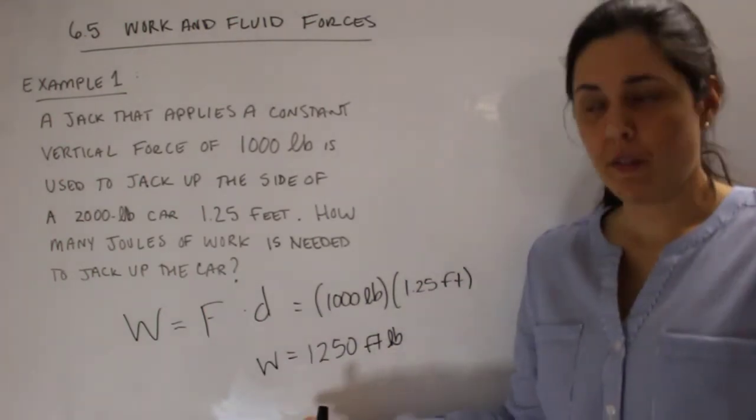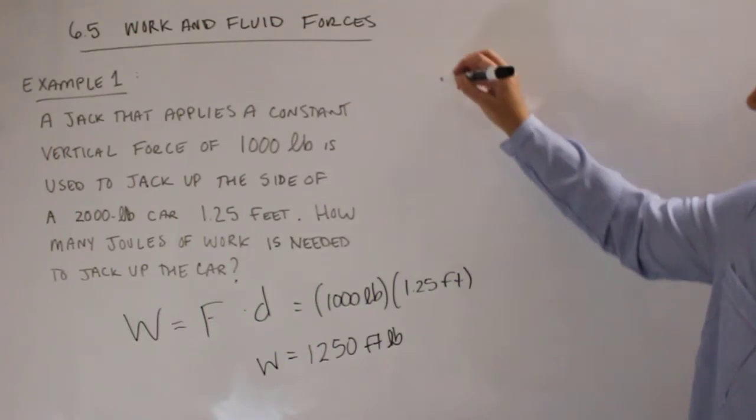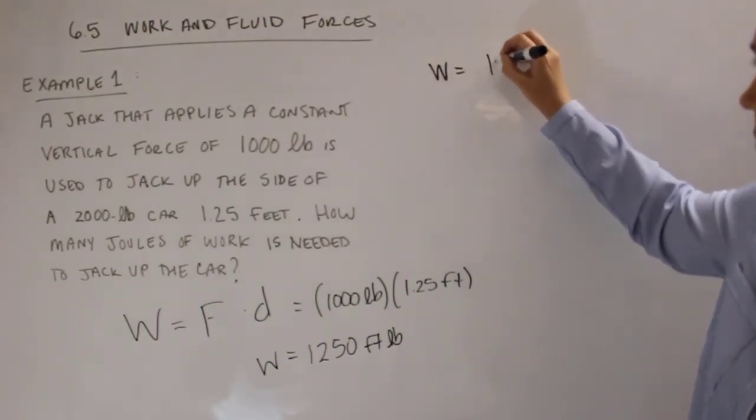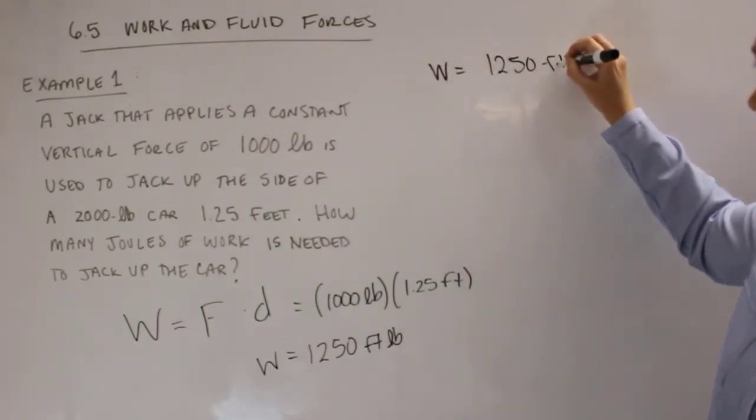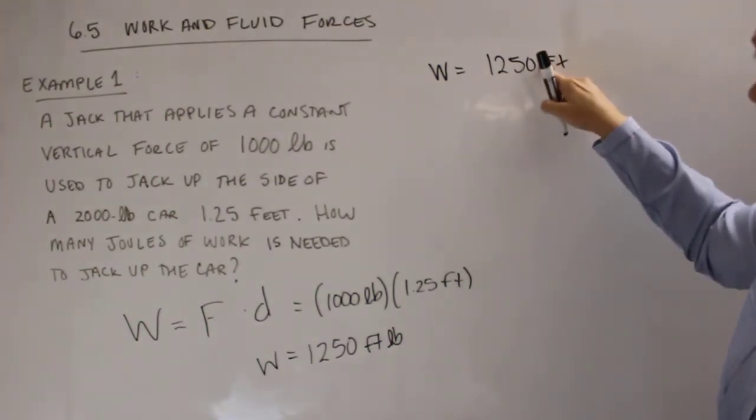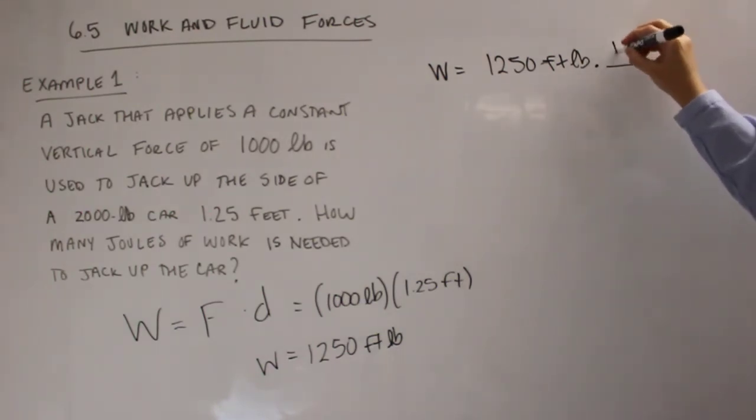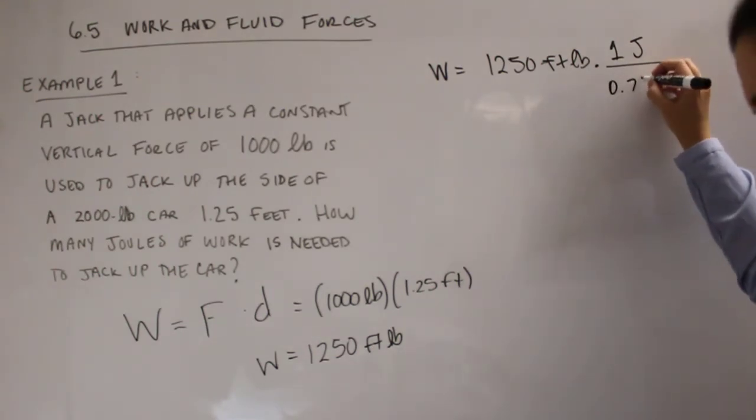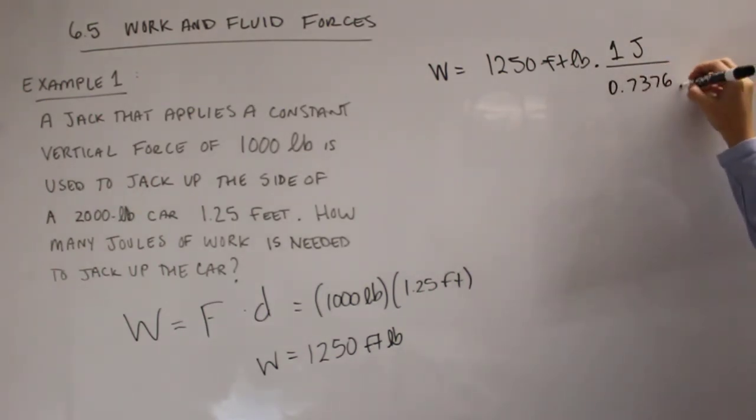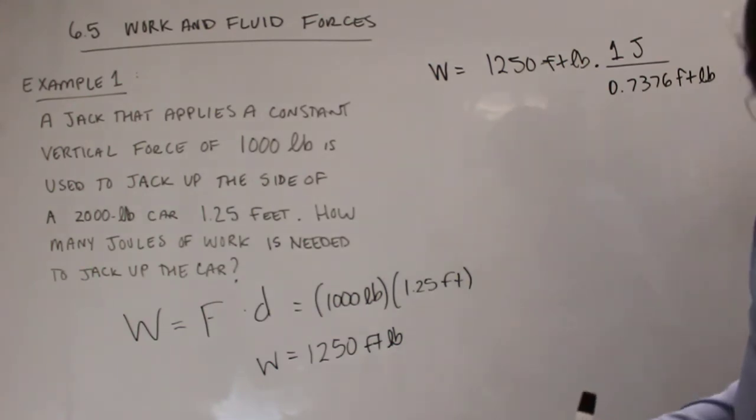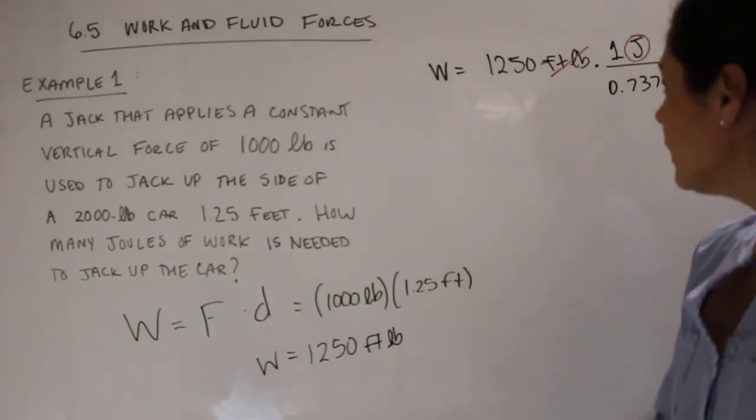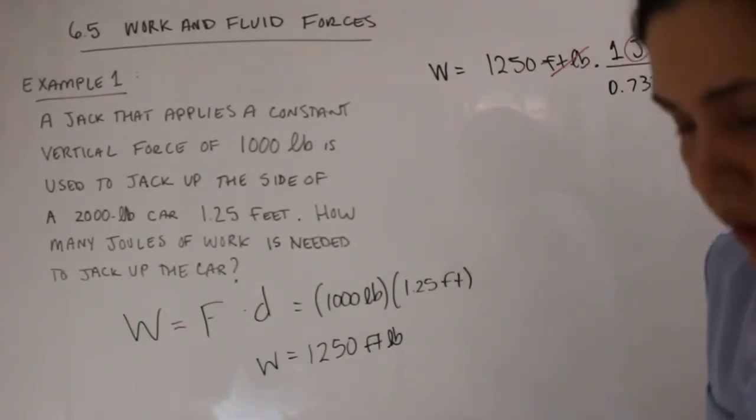So this would be the answer if it didn't ask for it in joules. So we're just going to convert our answer. So we have 1,250 foot pounds. We know that every 1 joule was about 0.7376 foot pounds. So we'll end up with this conversion, dividing out the units we don't want anymore, and we're left with the units we do want. And let's just use the calculator to get this number. So we have about 1,694.69 joules of work.